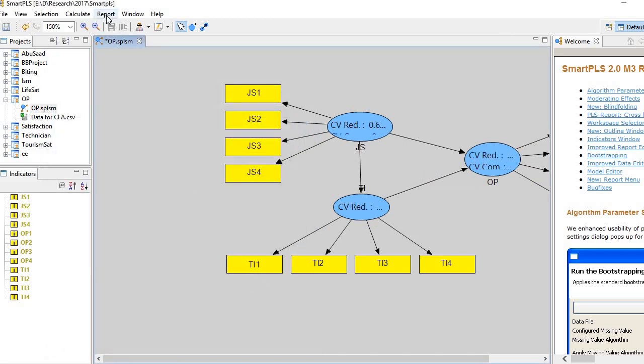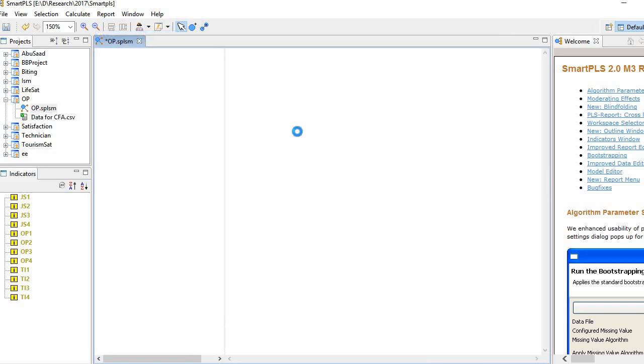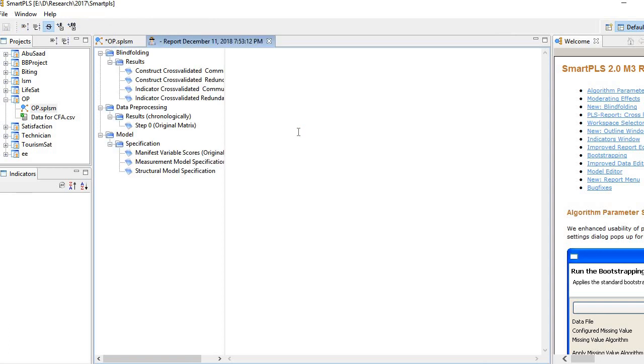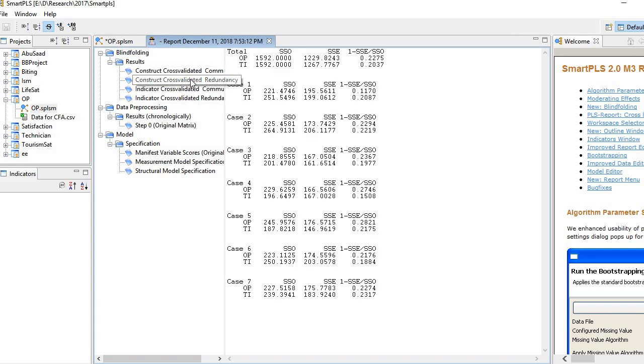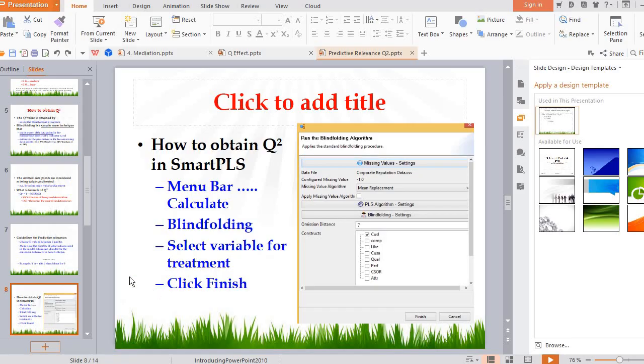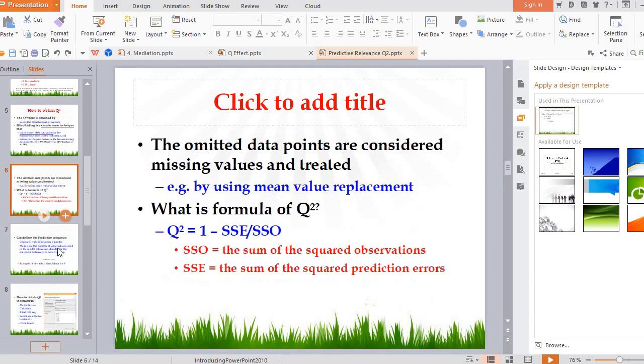So let's go to report, then default report. Here you see, we have several options. The second one is the construct cross-validated redundancy. You see the last column. Last column contains the values of the Q-square. 1 minus SSE divided by SSO. If you recall, I had explained you this one, the formula.